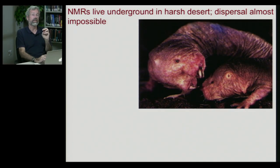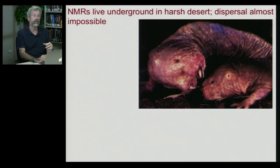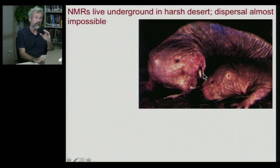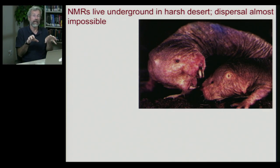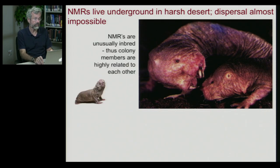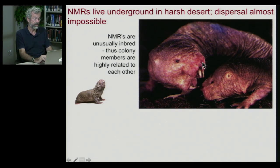Naked mole rats are the only eusocial vertebrate discovered so far. You have a queen naked mole rat and abused workers who slavishly tend to the needs of their mean queen. They live underground in the harsh deserts of East Africa, and they cannot survive outside the tunnel system of their colony. It is almost impossible for a young naked mole rat to leave home and start a new colony elsewhere — all colony systems with tunnels are already occupied. The habitat is saturated and it is almost impossible to get from one colony to another. As a result, these young naked mole rats often go nowhere. The breeding male — the king, as it were — is usually somebody from within the queen's own family. So you have naked mole rats who are habitually breeding within the family, and this sets up an interesting genetic consequence.